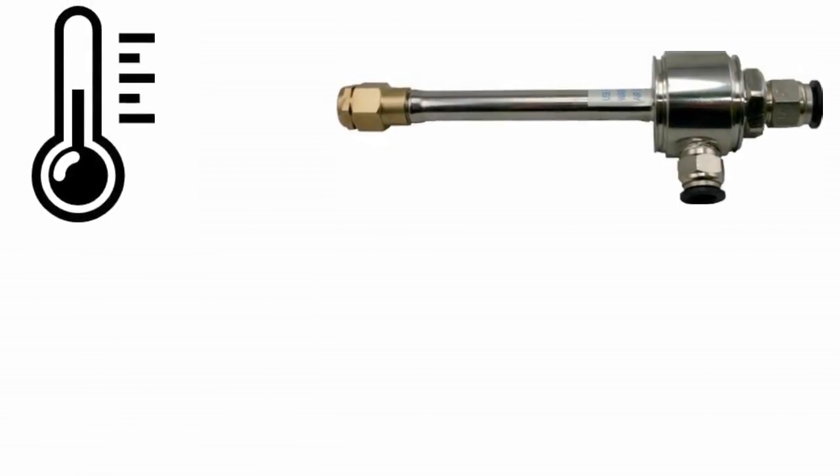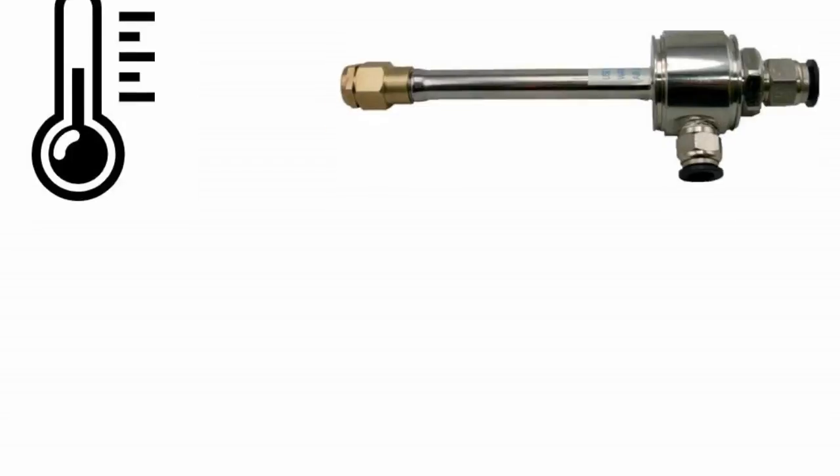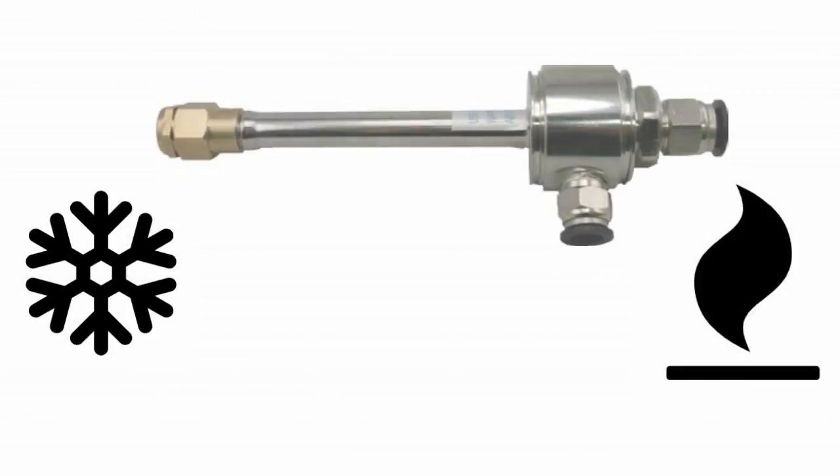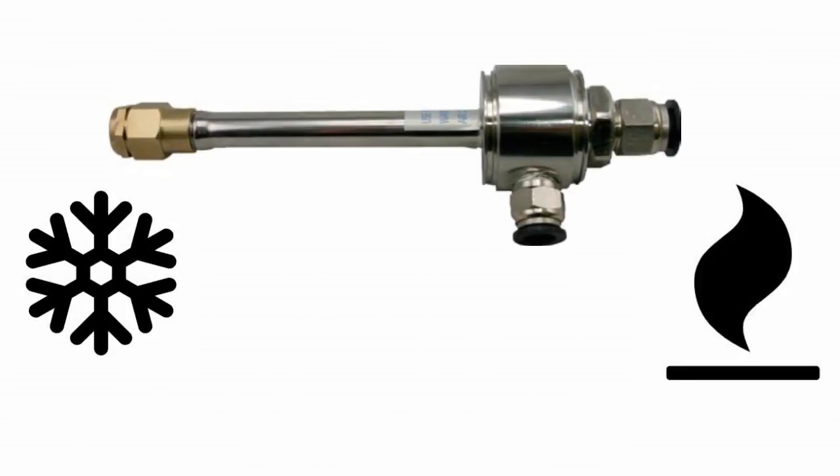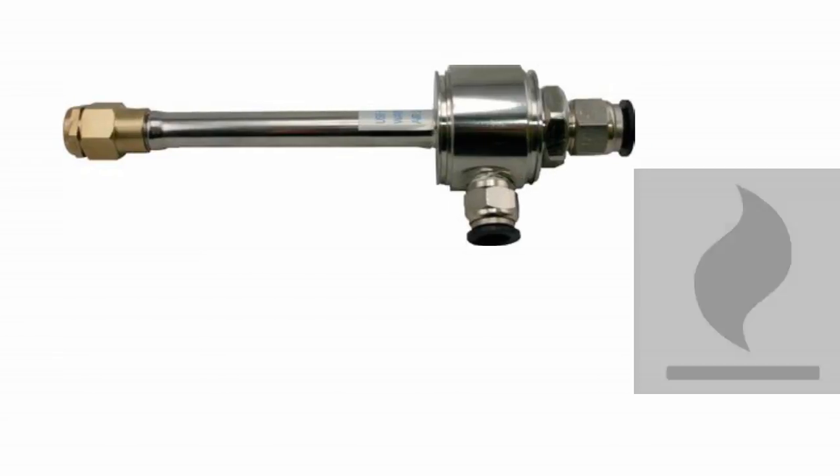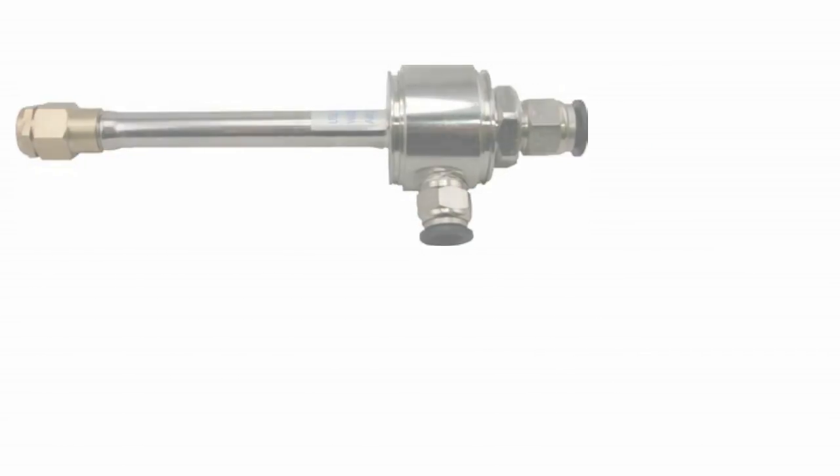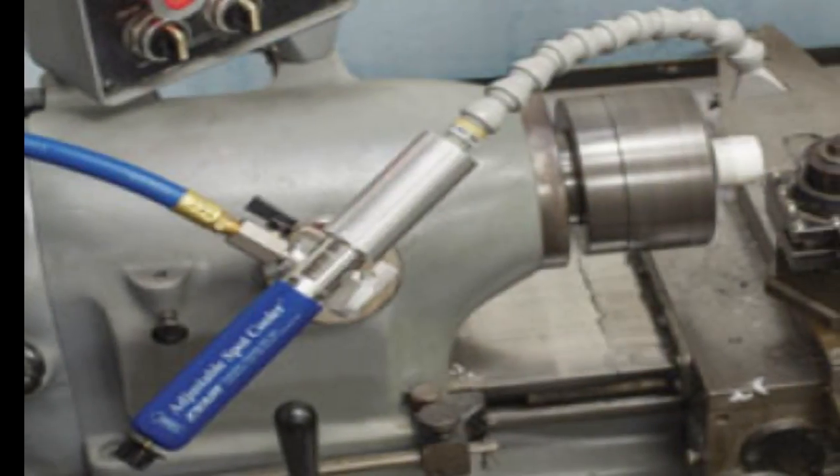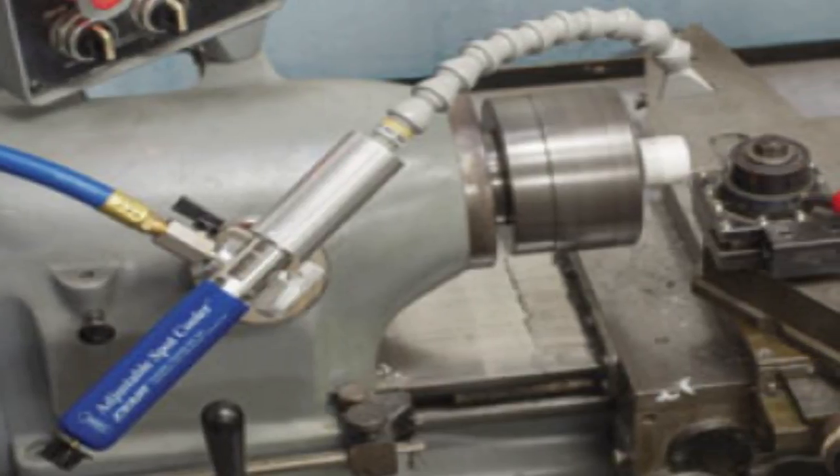At the cold end, you can achieve air stream temperatures of minus 50 degrees centigrade and at the other end, you can get as high temperature as 200 degrees centigrade. The most common use of vortex tube is spot cooling where compressed air is available.